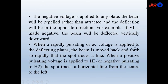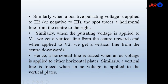When a rapidly pulsating or AC voltage is applied to the deflecting plates, the beam is moved back and forth so rapidly that the spot traces a line. When a positive pulsating voltage is applied to H1 or negative pulsating to H2, the spot traces a horizontal line from the center to the left. Similarly, when a positive pulsating voltage is applied to H2 or negative to H1, the spot traces a horizontal line from center to the right. When pulsating voltage is applied to V1, we get a vertical line from center upward; when applied to V2, we get a line from center downward. A horizontal line is traced when an AC voltage is applied to either horizontal plate; a vertical line is traced when AC voltage is applied to the vertical plates.